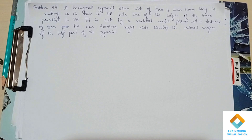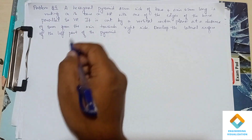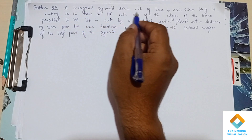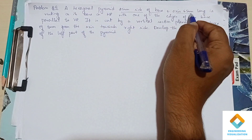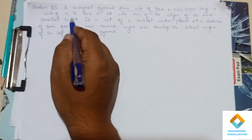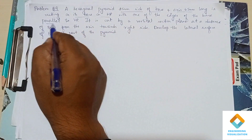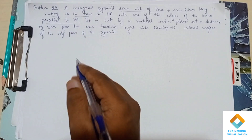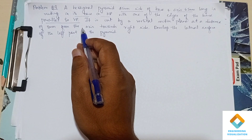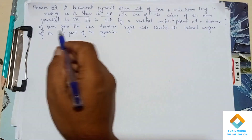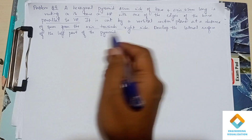Welcome to engineering visualization channel. Problem number 29: it is a hexagonal pyramid with base side 25 mm and axis length 65 mm, resting on its base on HP with one of its base edges parallel to VP. It is cut by a section plane at a distance of 8 mm from the axis towards the right side. Draw the development of the left part of the pyramid.